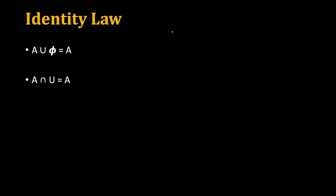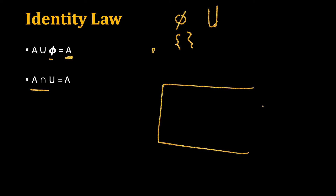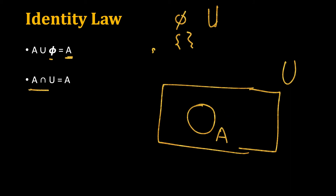The last two laws use the null set and the universal set. For identity law: A union the null set equals A, because the empty set contributes no new elements to the union. Similarly, A intersection U equals A, because A is inside the universal set U, so the elements common to both A and U are exactly the elements of A.